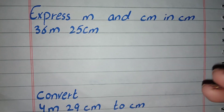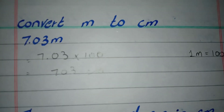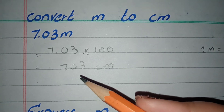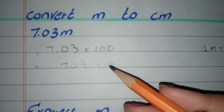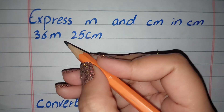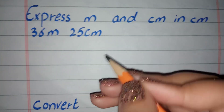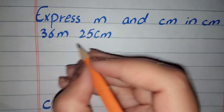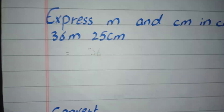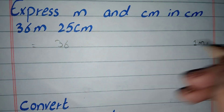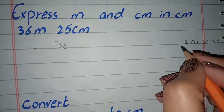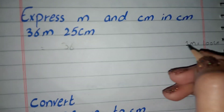To solve this, it's simple: when we have meters, we have to convert them into centimeters. Here we have two numbers — one in meters and one in centimeters — so we will convert both into centimeters. We will write 36 here. For meters, we convert to centimeters because one meter is equal to 100 centimeters. You have to remember: one meter equals 100 centimeters.